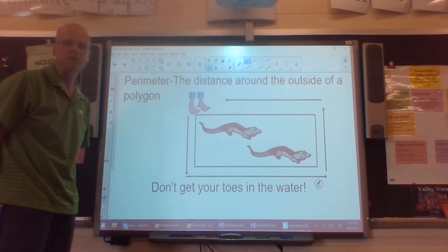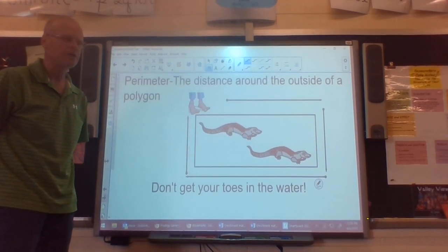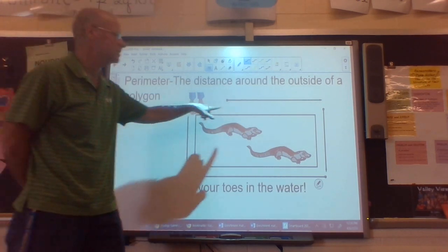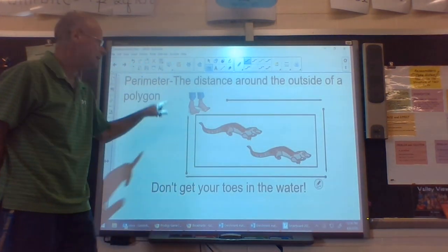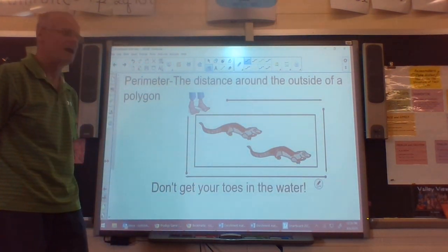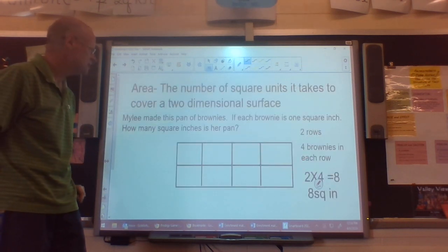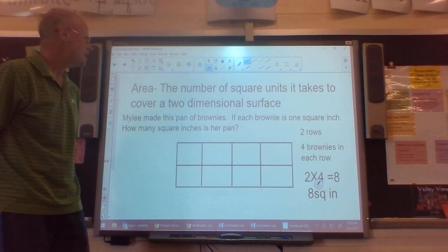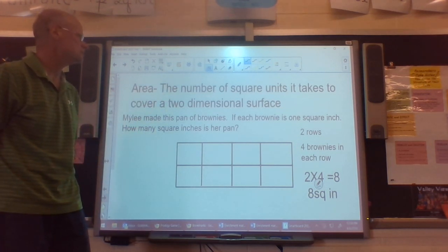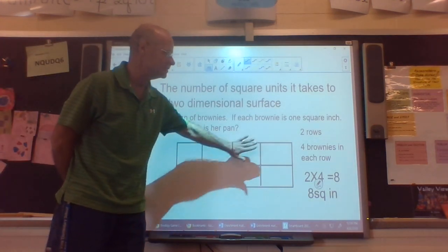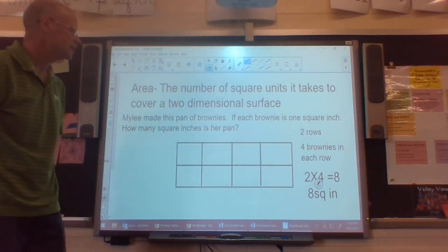To quickly review what we did last week, we talked about perimeter, perimeter being the distance around the outside of a polygon. Today our lesson is going to be on area. Area is the number of square units it takes to cover a two-dimensional surface, so I want to know the inside this time. That's going to be our area.